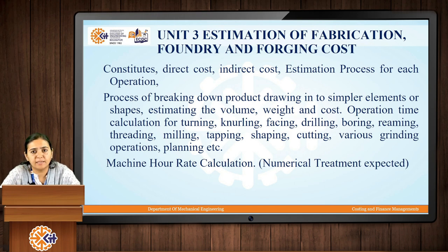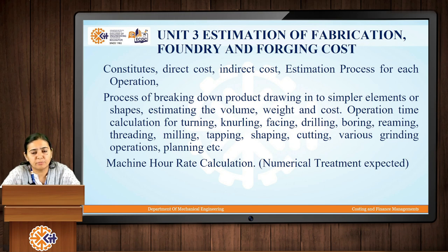Unit 3 is dedicated to the estimation of fabrication, foundry, and forging cost. Different manufacturing processes are used for production of different items — fabrication or welding, foundry processes, forging, and machining operations. The method of cost estimation differs for each process because they vary in material requirement, labor requirement, and indirect or overhead requirements. We will study the constituents of costing for each type of industry, including direct cost, indirect cost, and the estimation process for each operation.